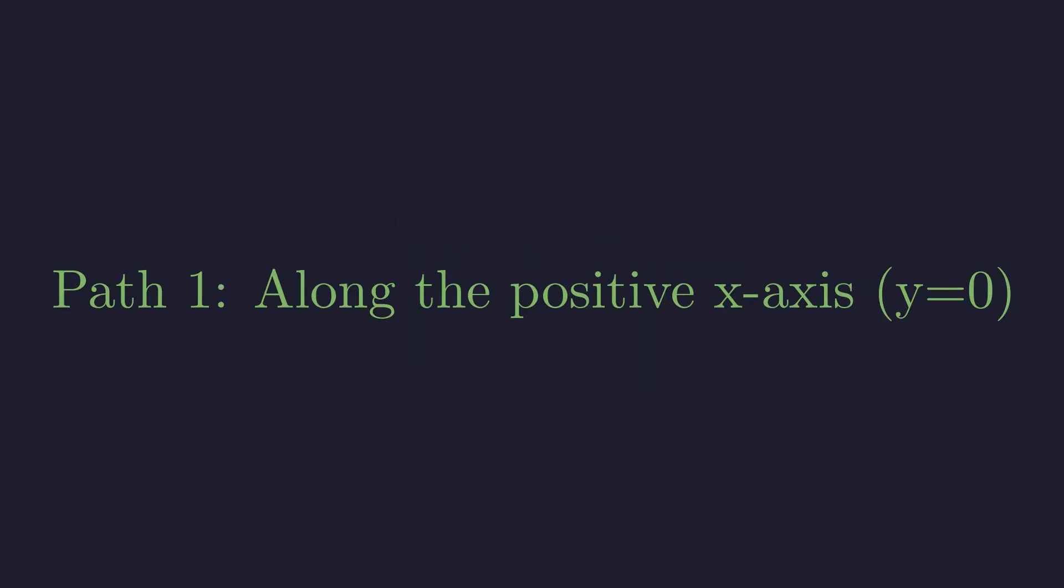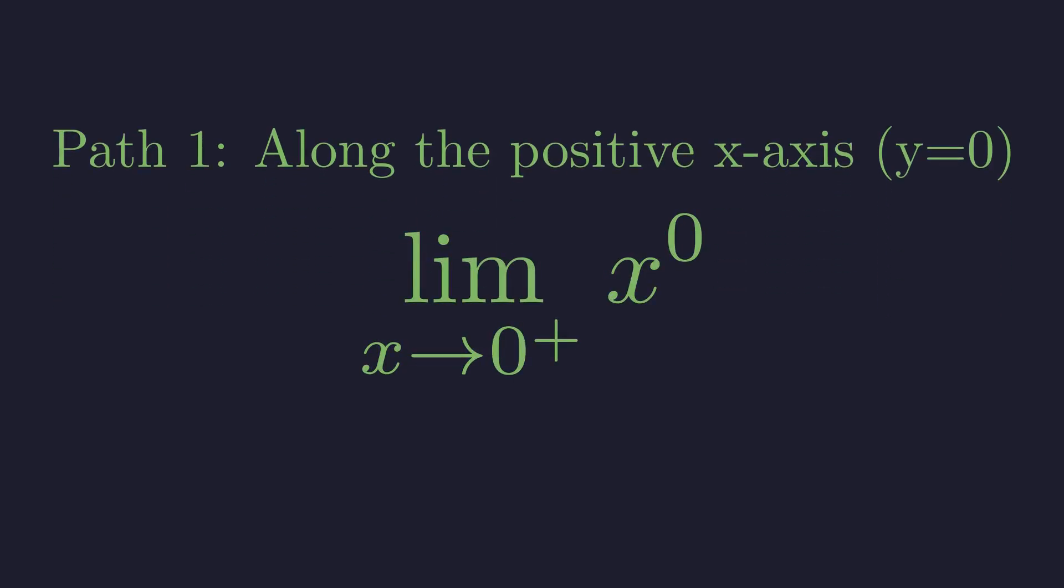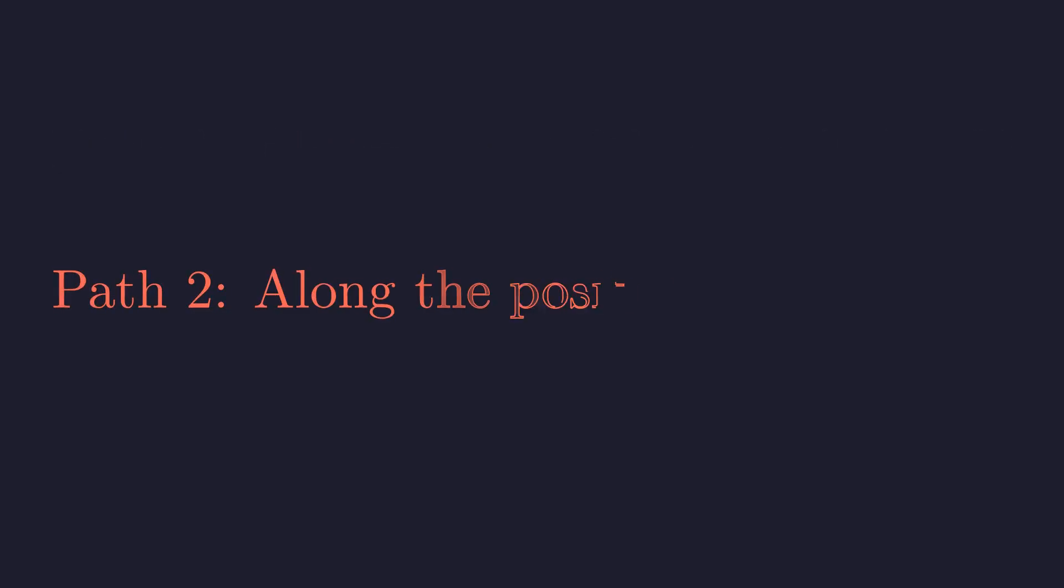Let's test our first path. We will approach the origin along the positive x-axis, where the y coordinate is always zero. We evaluate the limit of x to the power of zero as x approaches from the positive side. Since x to the power of zero is one for any positive x, this simplifies to the limit of a constant, which is the constant itself. So along this path, the limit is one.